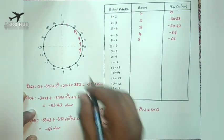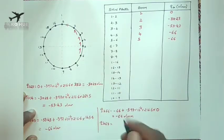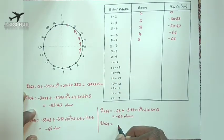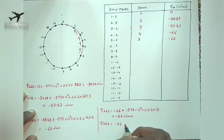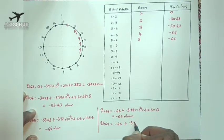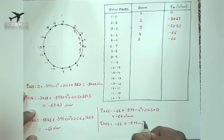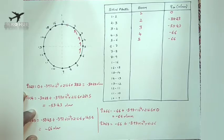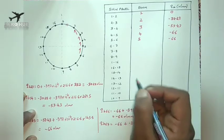For QB6,7, considering the previous skin panel shear flow of minus 66, plus minus 3.97 into 10 power minus 4 into 216.6. For panel 6-7 we are crossing boom number 6.